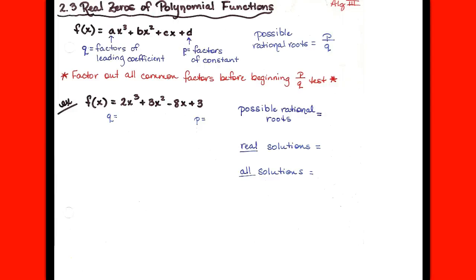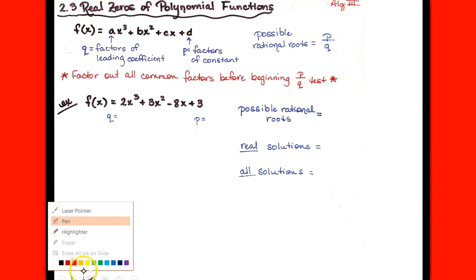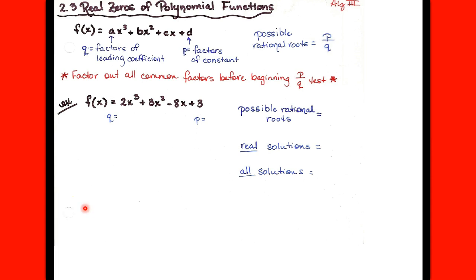On page 166, we are picking up with the rational zero test. You might remember that last week in the first part of section 2-3, we were talking about ways we could factor things we didn't know how to factor before. For instance, if we had a cubic with no greatest common factor and couldn't factor by grouping, and they gave me something to factor it by, we could do polynomial long division or synthetic division. What we want to pick up today is: what if they don't give me the way to start? What if they don't give me that first factor? I could find that for myself using the rational zero test on page 166.